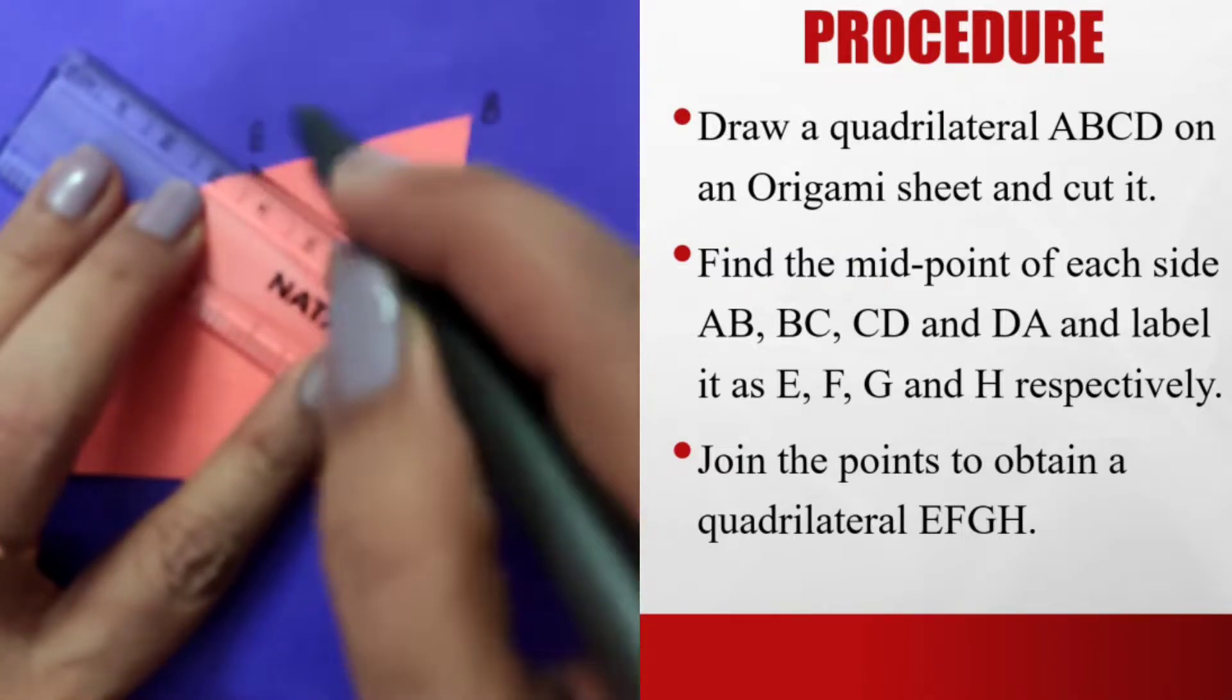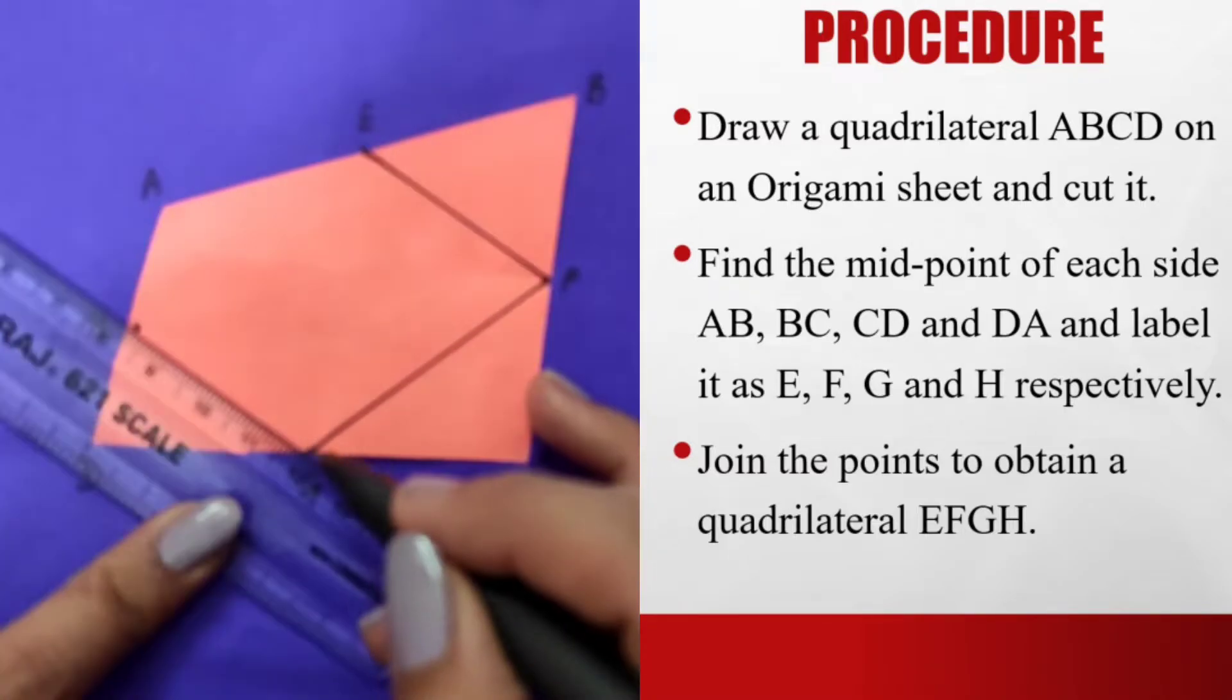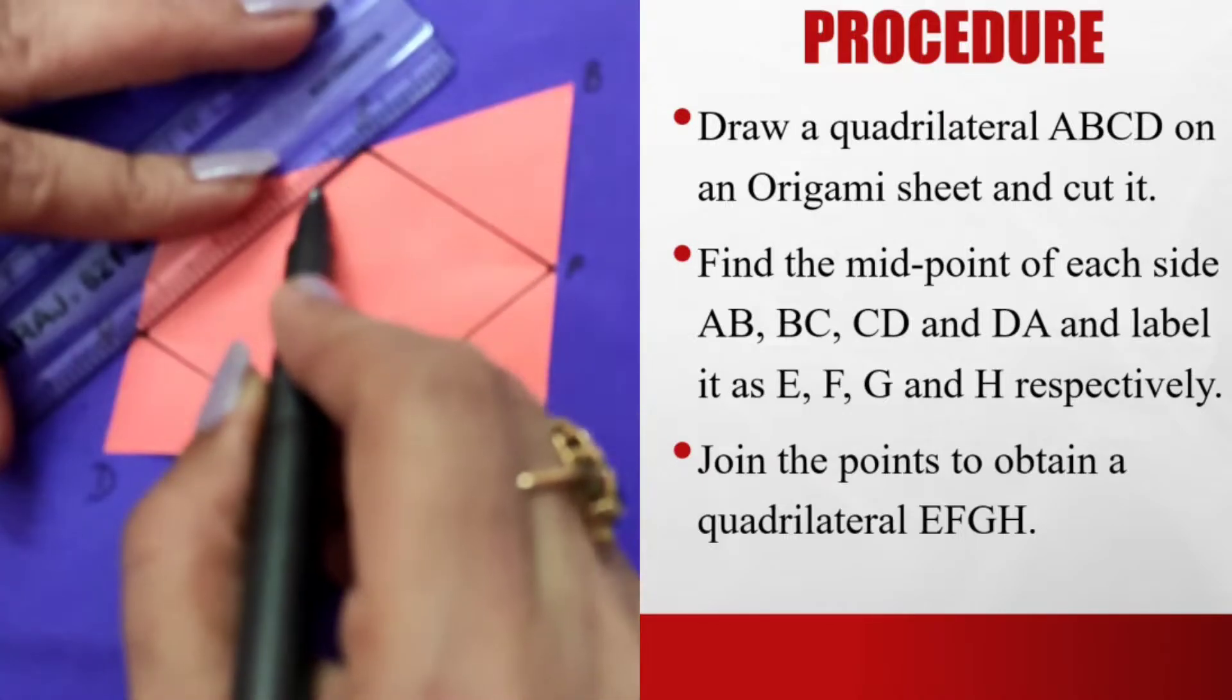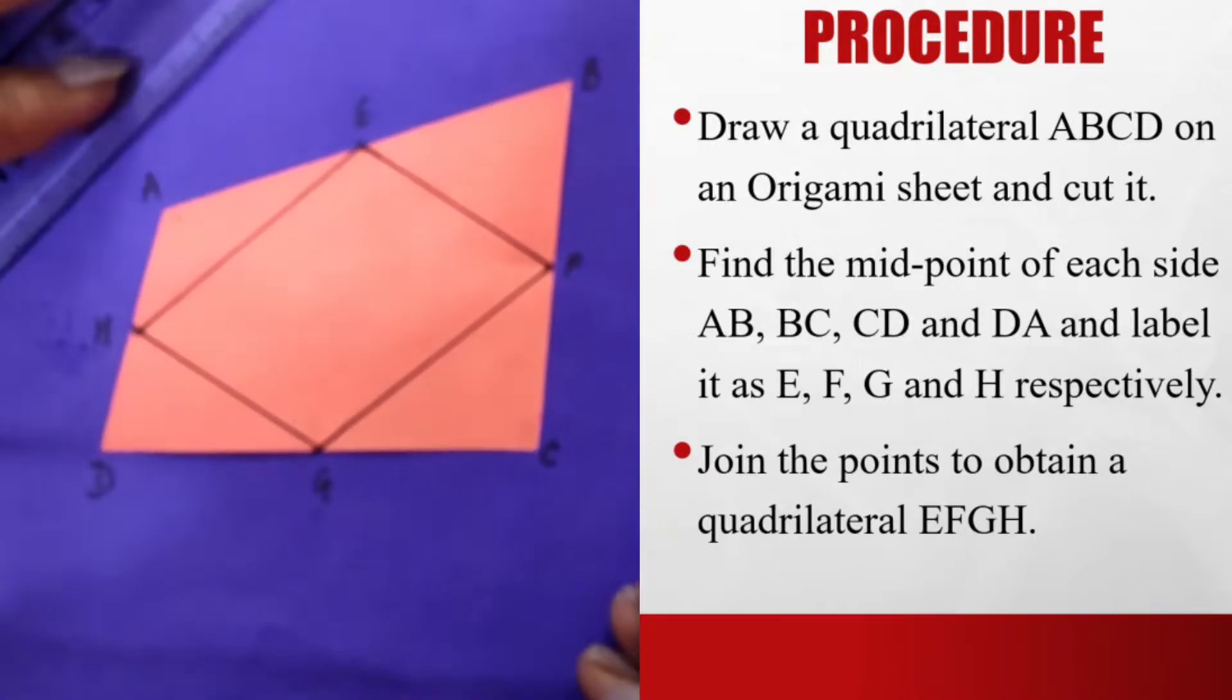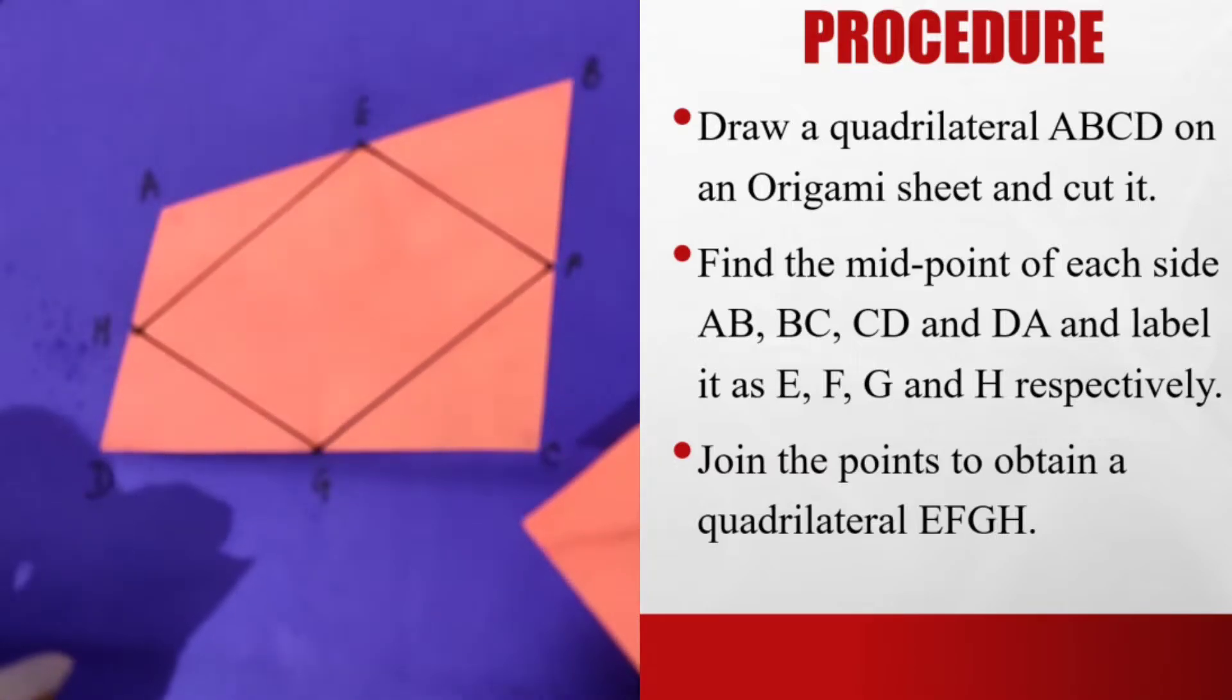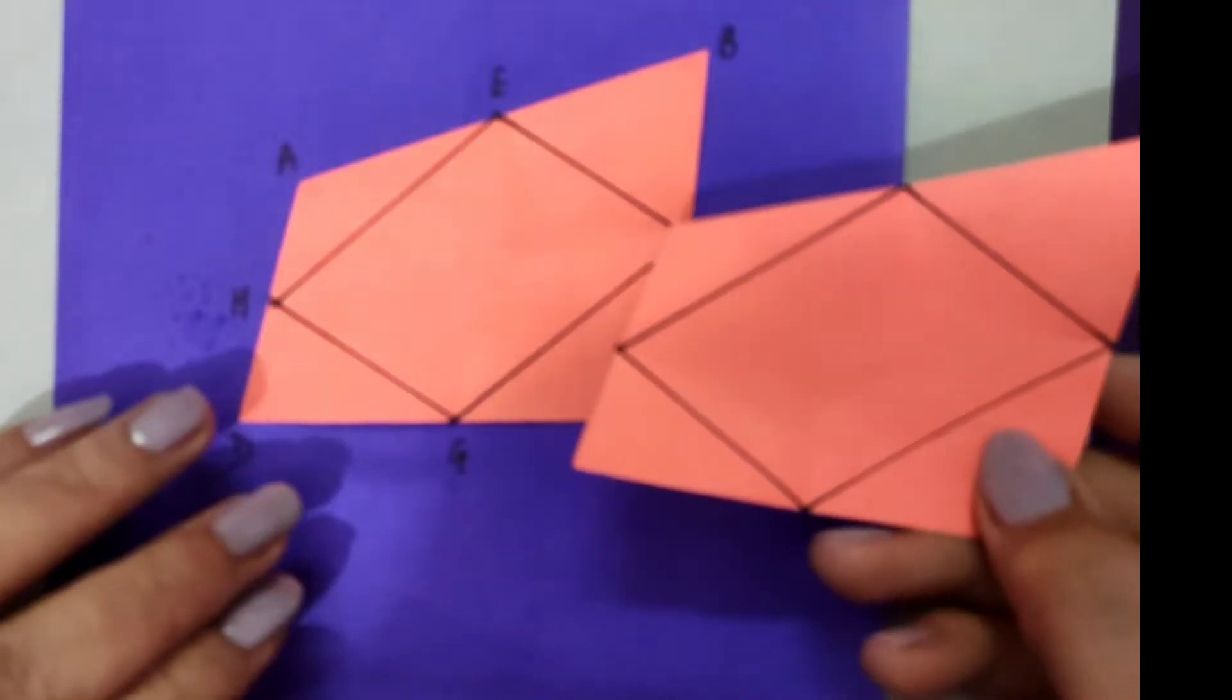I join E, F, G, H, and H. So I have joined the midpoints. Exactly the same thing I will be doing with the second quadrilateral that I have. So I have done the same thing with the second quadrilateral also.